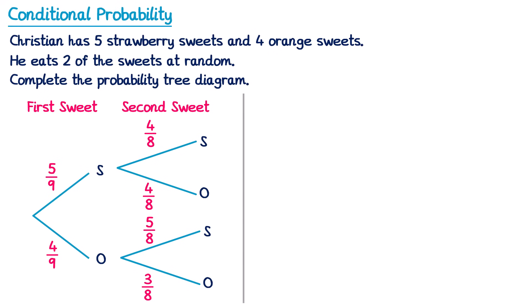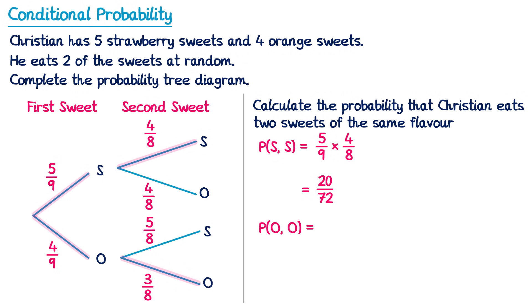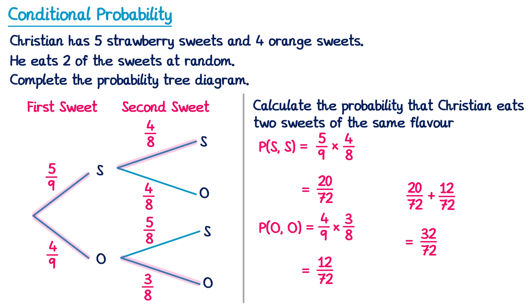Now let's have a look at a question using this tree diagram. The question says: calculate the probability that Christian eats two sweets of the same flavour. The first way this could happen is strawberry followed by strawberry: five over nine multiplied by four over eight gives twenty over seventy-two. There is another way — orange followed by orange: four over nine multiplied by three over eight gives twelve over seventy-two. Since both are ways of eating two sweets of the same flavour we add those probabilities together. Twenty plus twelve is thirty-two over seventy-two. So that is the answer.